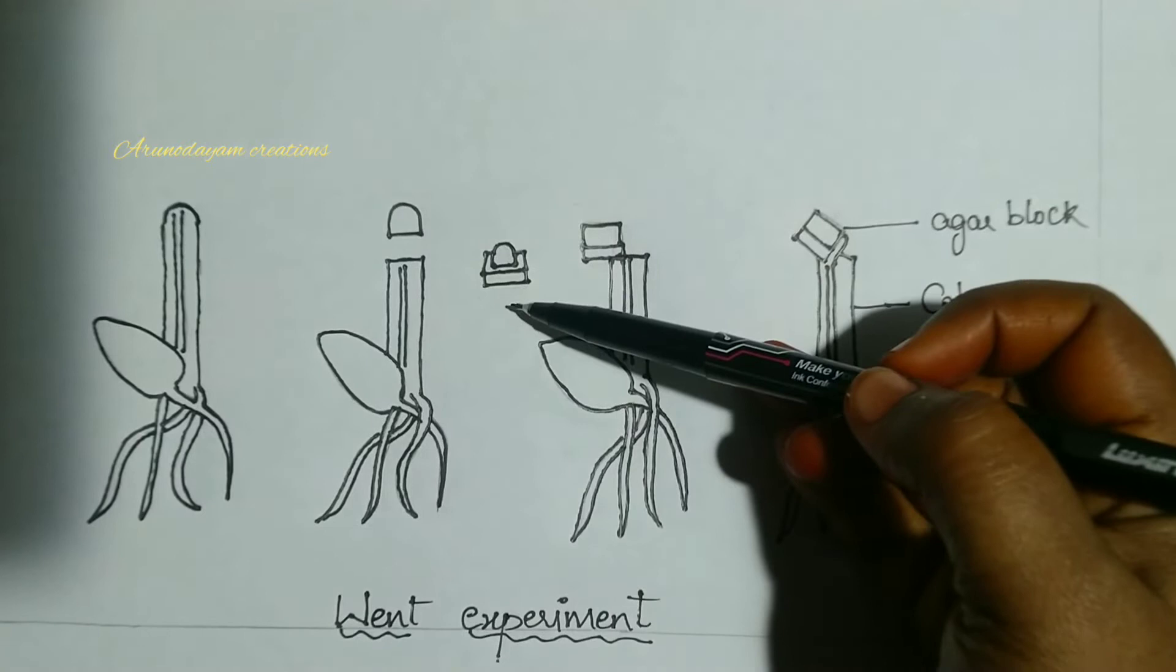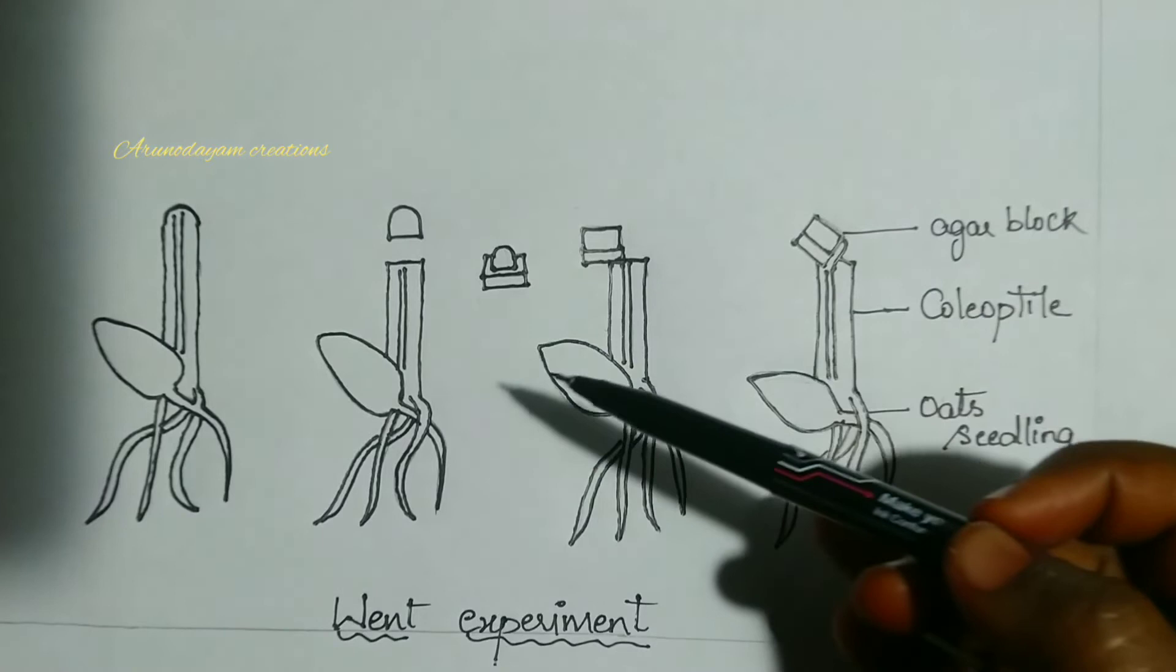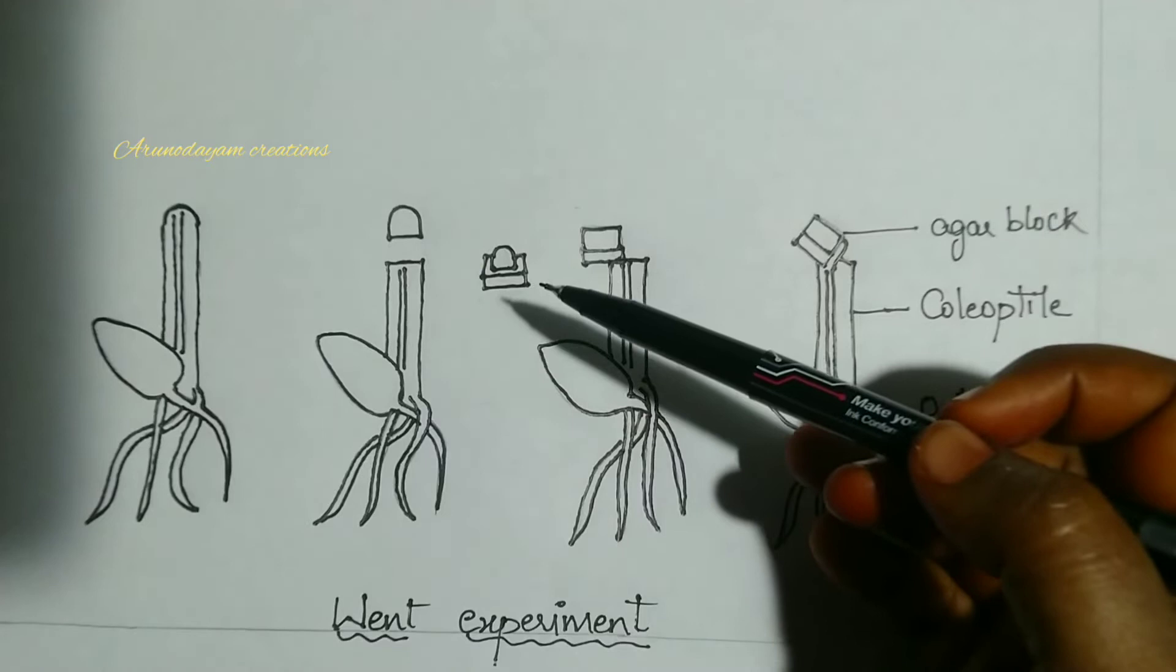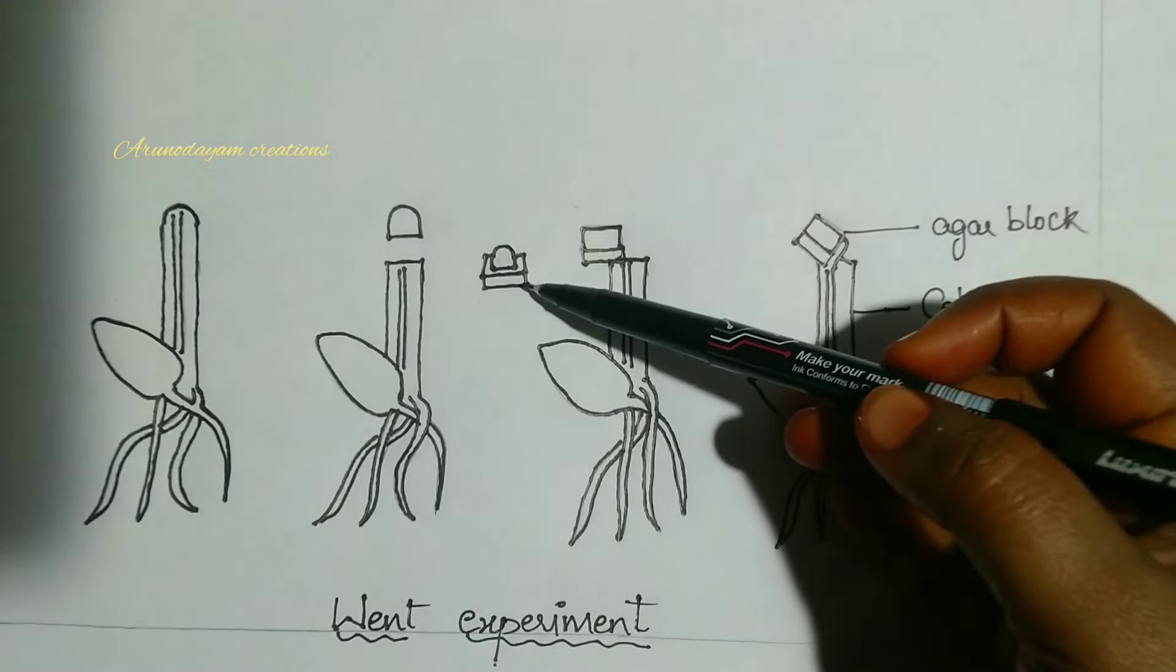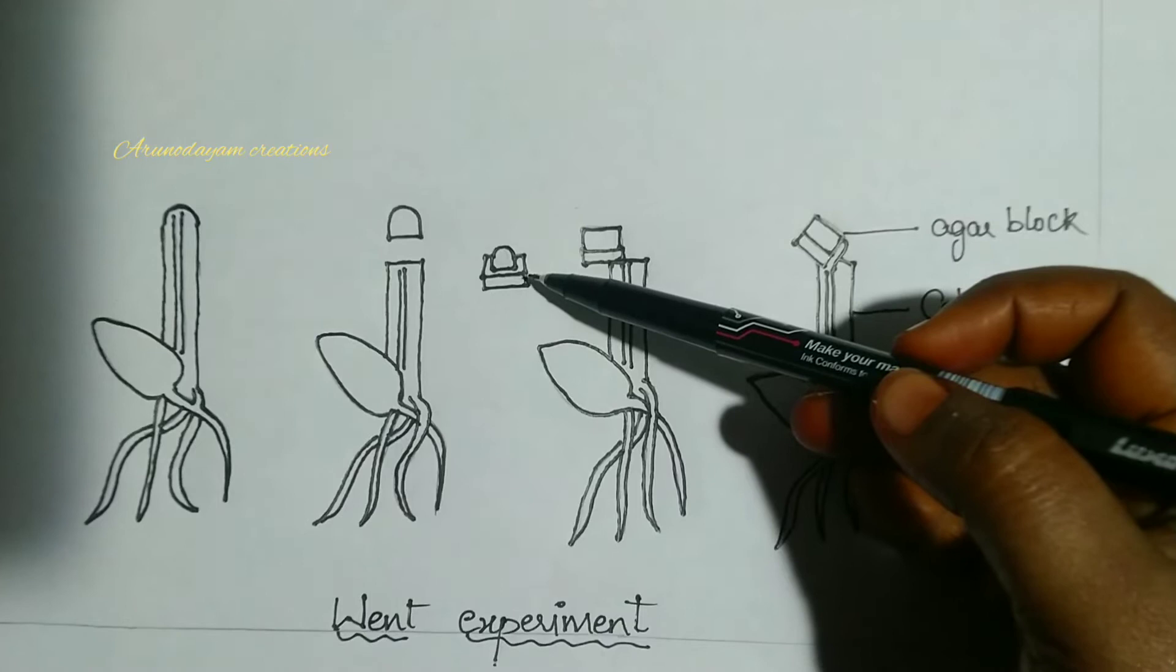Agar block is a jelly-like substance produced from red algae seaweeds. It contains nutrients, especially polysaccharides, and is used in experiments. He put that cap portion or tip portion of coleoptile on it for one hour. After one hour, he removed that tip portion.